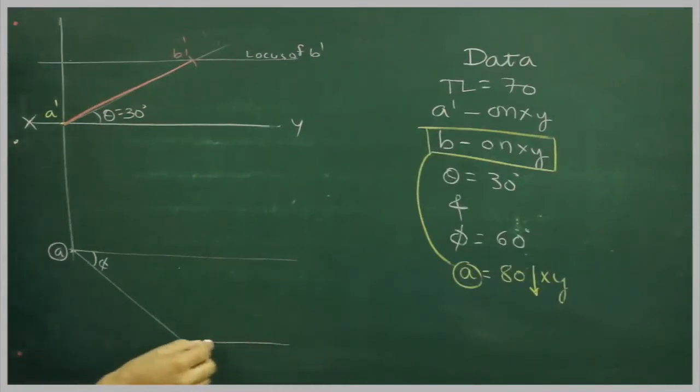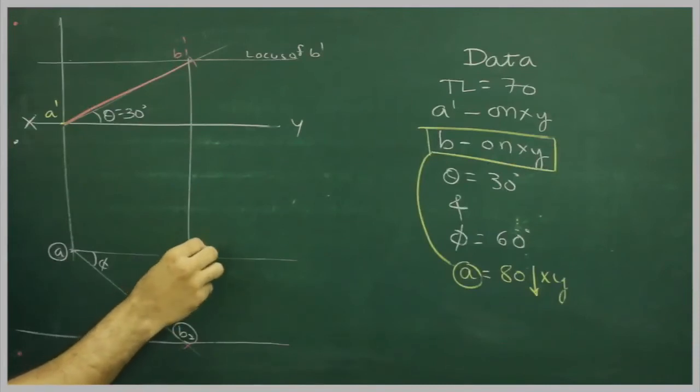That is b2, assumption. Then we can draw a straight line from b1 dash. Wherever we cut, that would be b1.